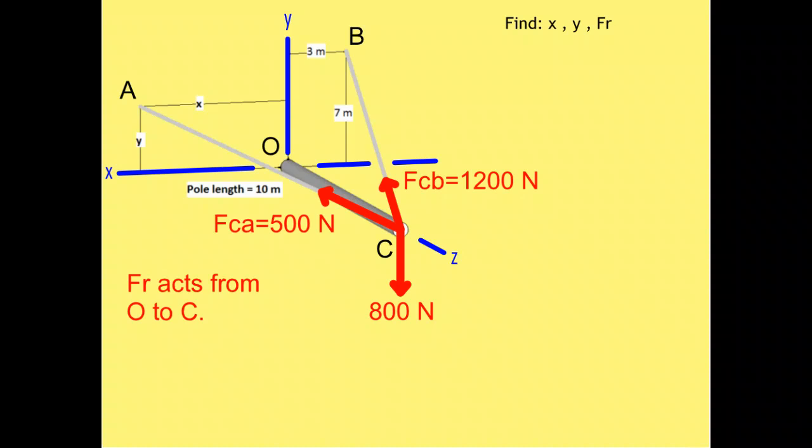Suppose the following force information was given to us. The force along cable CB is 1,200 newtons and travels from the pole at point C to the wall at point B. The force along cable CA is 500 newtons and travels from the pole at point C to the wall at point A. There is an 800 newton load applied in the negative y direction at the far end of the pole. Lastly, the reaction force is a vector from point O to point C. With this pole in equilibrium, we are asked to find the x and y positions and the resultant force.